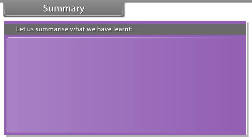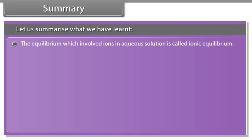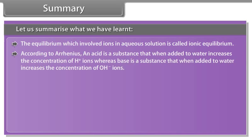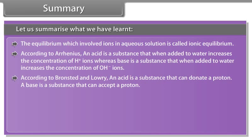Summary: The equilibrium which involves ions in aqueous solution is called ionic equilibrium. According to Arrhenius, an acid is a substance that when added to water increases the concentration of H⁺ ions, whereas a base increases the concentration of OH⁻ ions. According to Bronsted and Lowry, an acid is a substance that can donate a proton, and a base is a substance that can accept a proton.